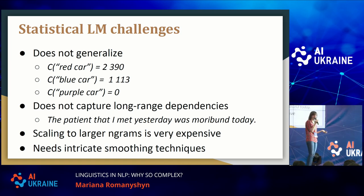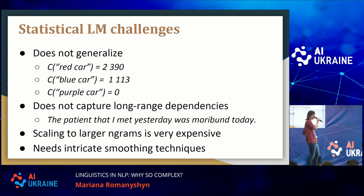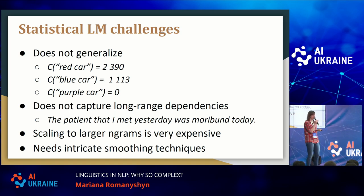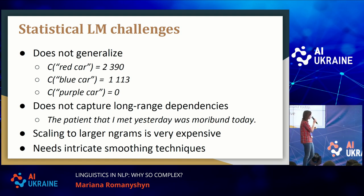There are some challenges for statistical language models. First, they do not generalize much, and you need a really large corpus representing British English, American English, and so on. For example, if you've never seen "purple car" in your corpus, the probability will be zero, although this is a very probable phrase. The statistical language model will not know that "purple" is a color and will not generalize to that.